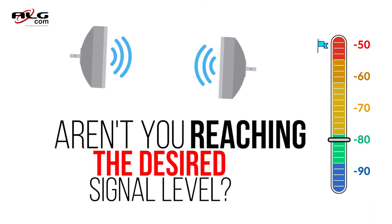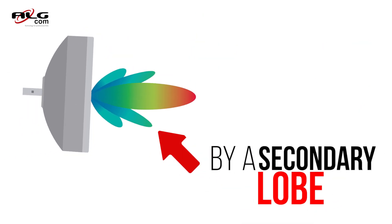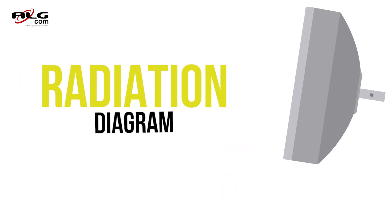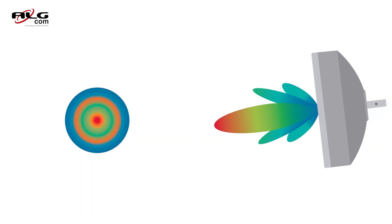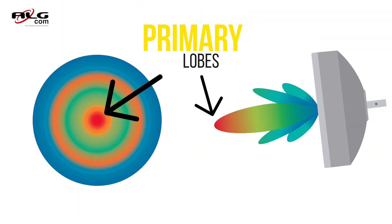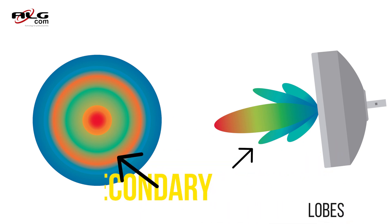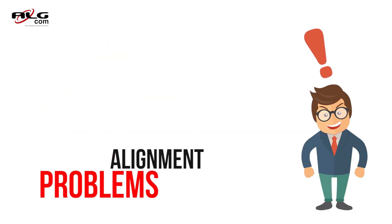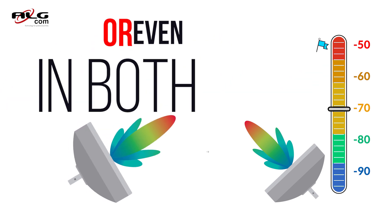Aren't you reaching the desired signal level? You may be aligning the antenna by a secondary lobe. The antenna's radiation diagram has many secondary lobes. Problems in a radio link aligned by a secondary lobe antenna are very common. They can occur in only one antenna or even in both.